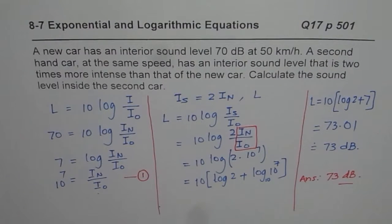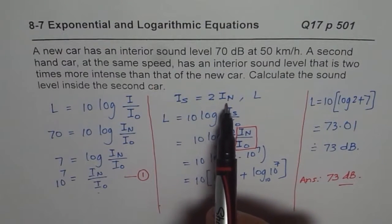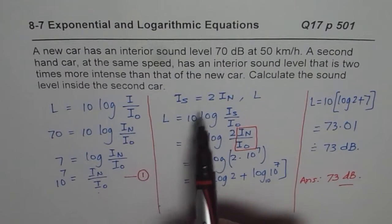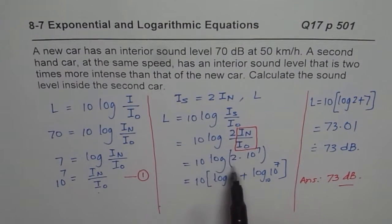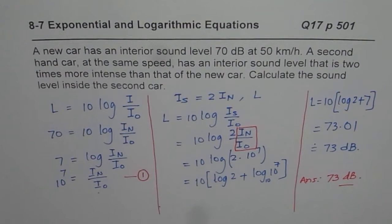So the idea here is that you write the intensity of the second-hand car in terms of the new car, replace it, apply the properties of logarithms, it becomes simpler. I hope that helps. Thank you.